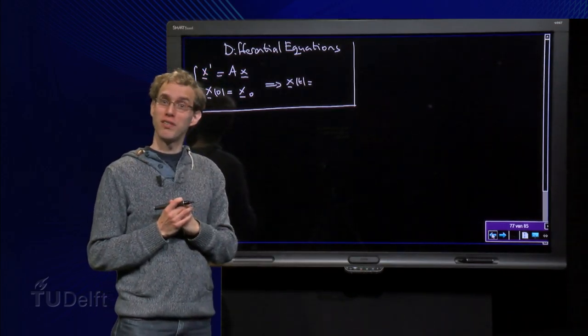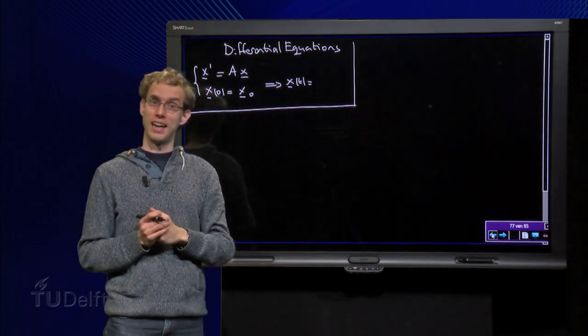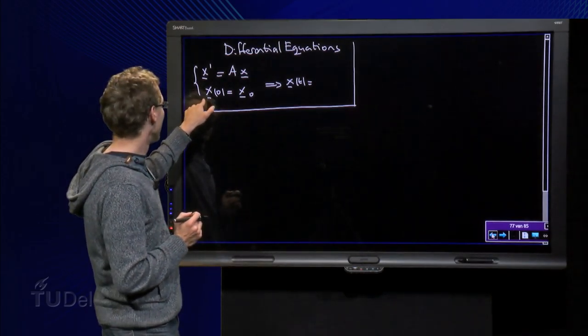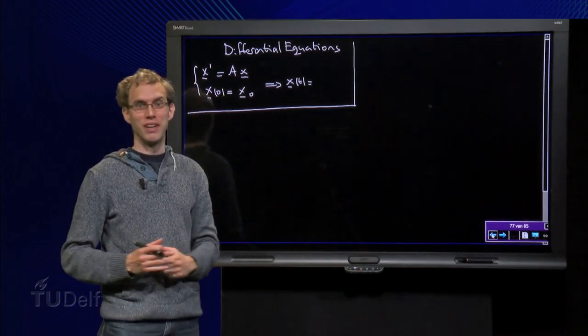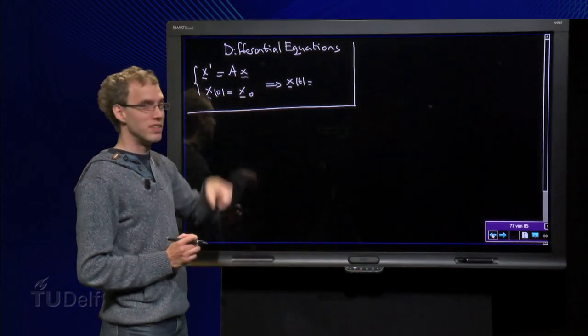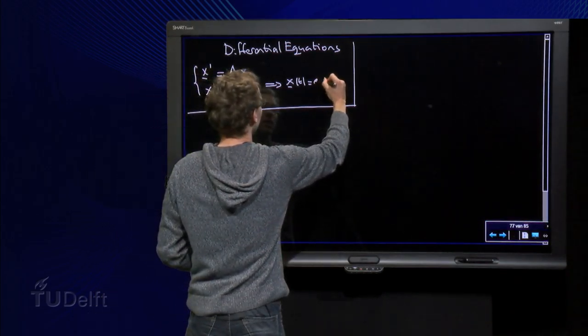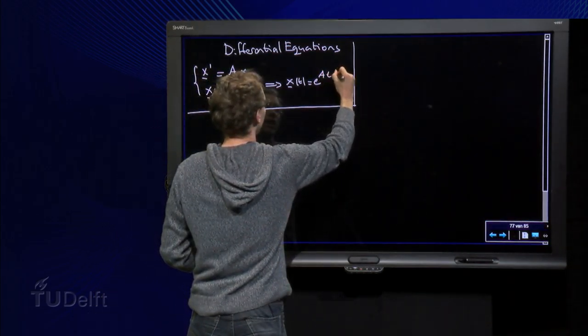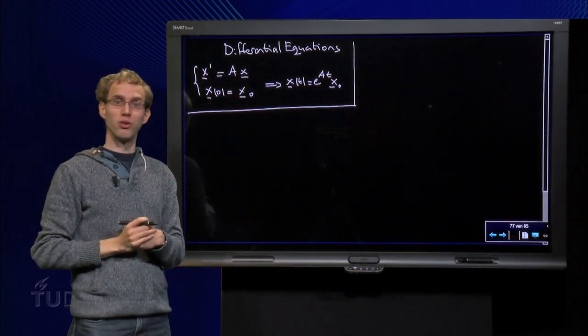Suppose we have a differential equation of the form x' equals a times x, where a is a matrix, and where x0 equals x0 is some initial condition, some initial vector, then x of t equals just the same e to the power at times x0, and there we have our solution.